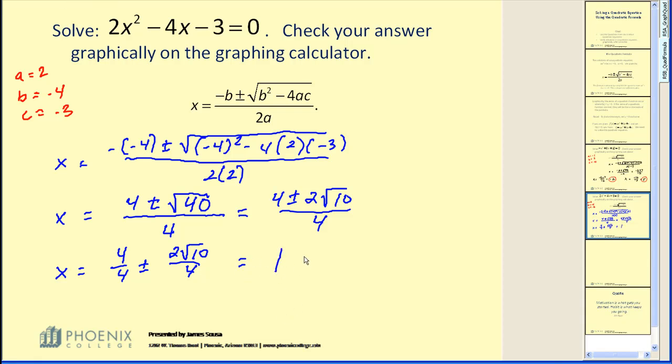This will eliminate any careless simplifying mistakes. Four over four would give us one plus or minus two over four. Of course, it's simplified to one-half.